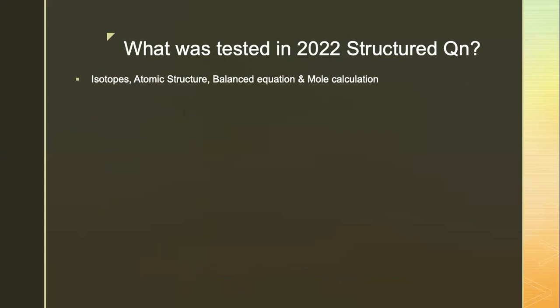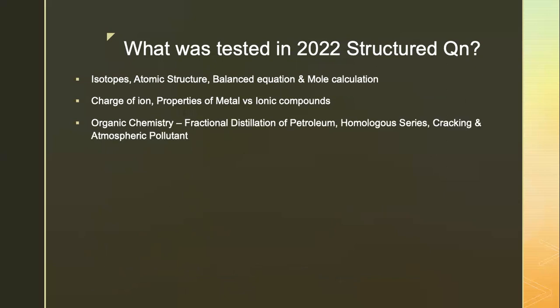In the structured section, isotopes, atomic structure, balanced equations and mole calculation were tested. The charge of ions and comparing the properties of metals versus ionic compounds. Organic chemistry was in the compulsory section, where students were tested on fractional distillation of petroleum, what is a homologous series, cracking, and atmospheric pollutants.